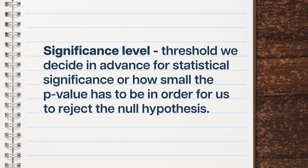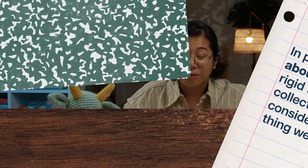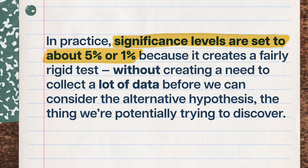To help make the decision about our null hypothesis, we use what's called a significance level. This is a threshold we decide in advance for how small the p-value has to be in order for us to reject the null hypothesis. A smaller significance level means that the data have to look really different from the null hypothesis's predictions for us to reject it. Setting a threshold makes sure we're not too quick to reject the null hypothesis just because the data happened to look a little off. In practice, significance levels are set to about 5% or 1%, because it creates a fairly rigid test without requiring a huge amount of data. But for a groundbreaking discovery or high-stakes situation like rolling out a new drug, we might opt for a much lower significance threshold, trading off some discovery-finding potential for certainty.